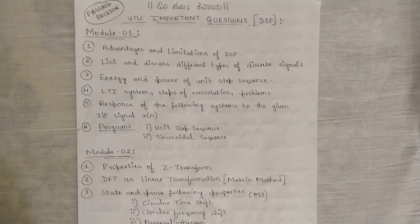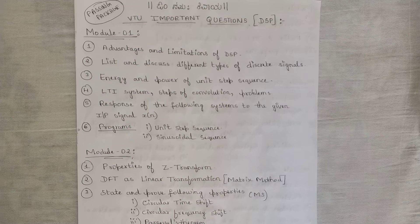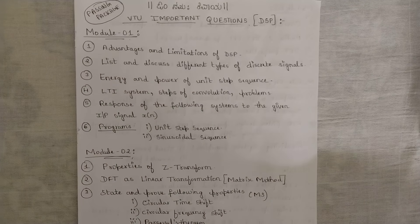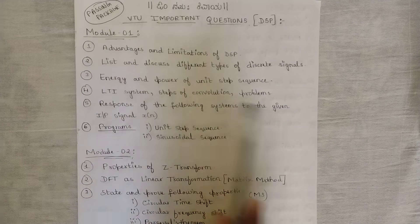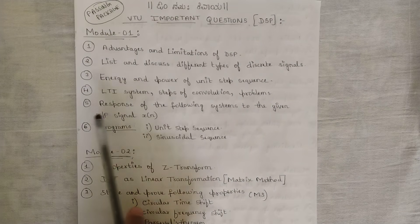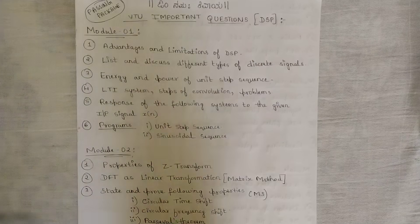Next is LTI system steps of convolution and problems related to the linear time invariant system. They would give you a sequence with an arrow point, and based on that you should perform the steps of convolution. They would give you some set of signals and you should know how to solve them using the LTI system. This topic has been multiple times repeated in previous papers.